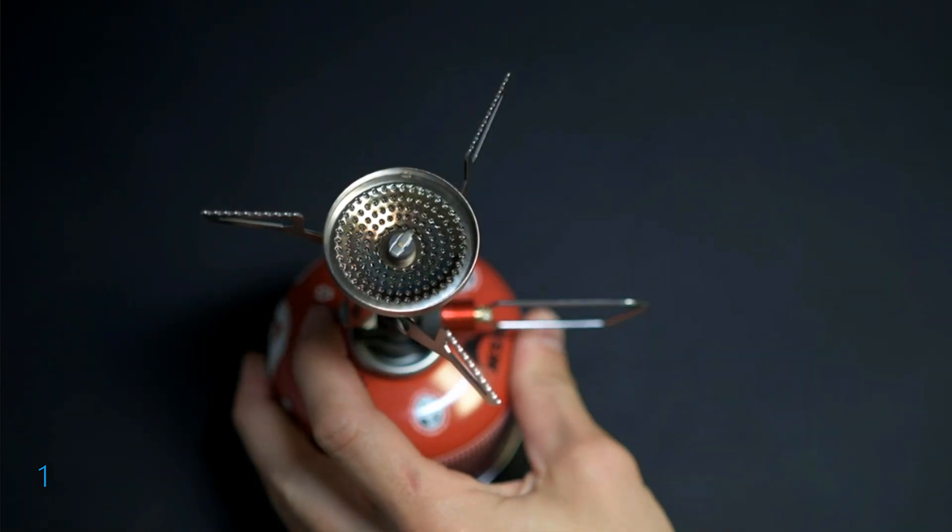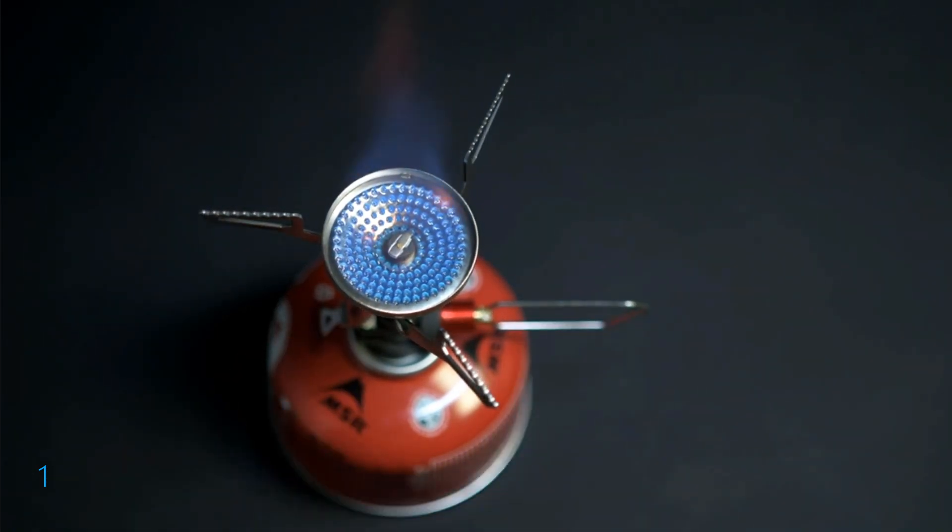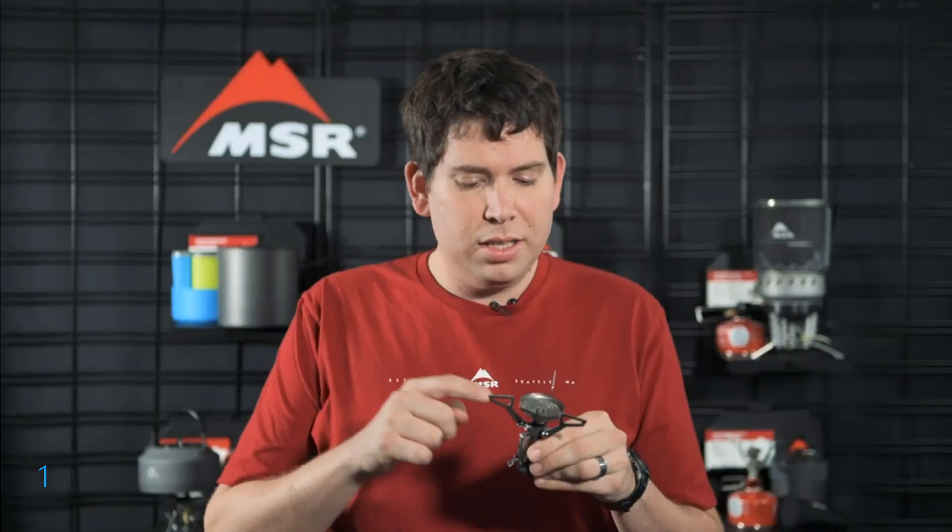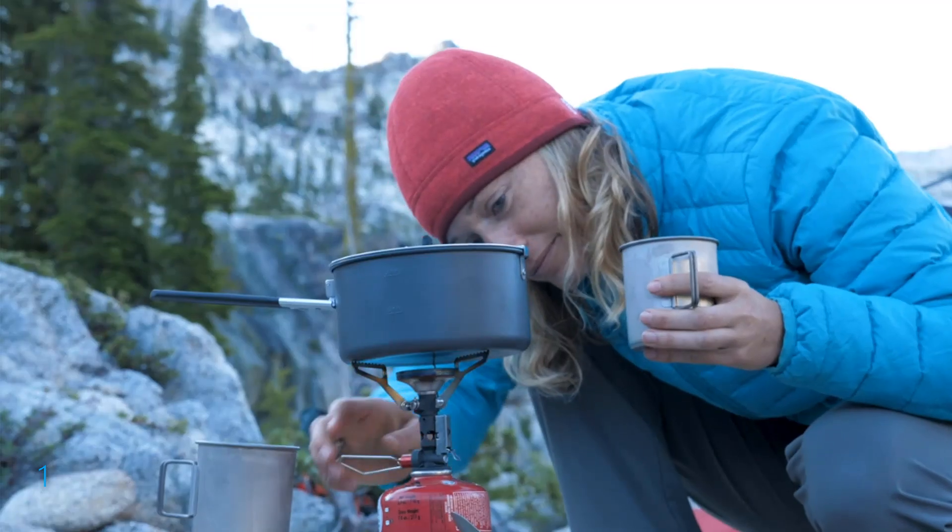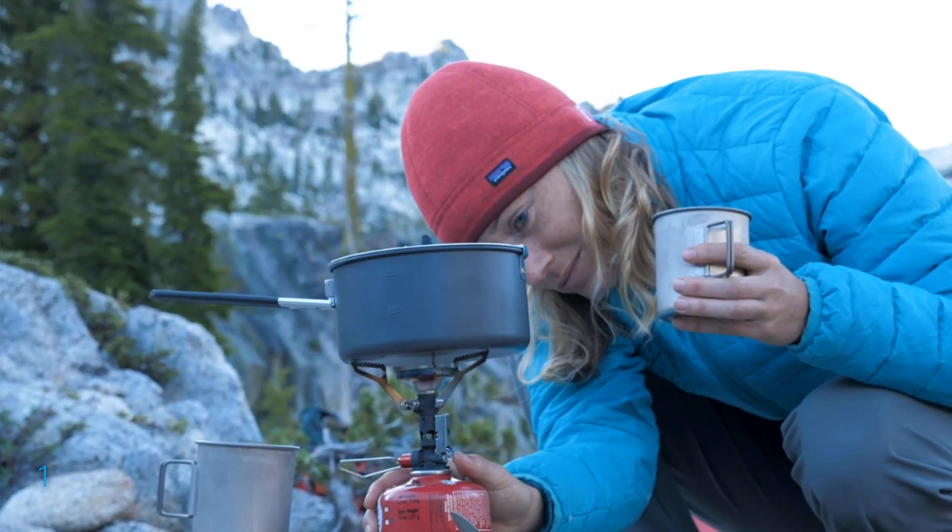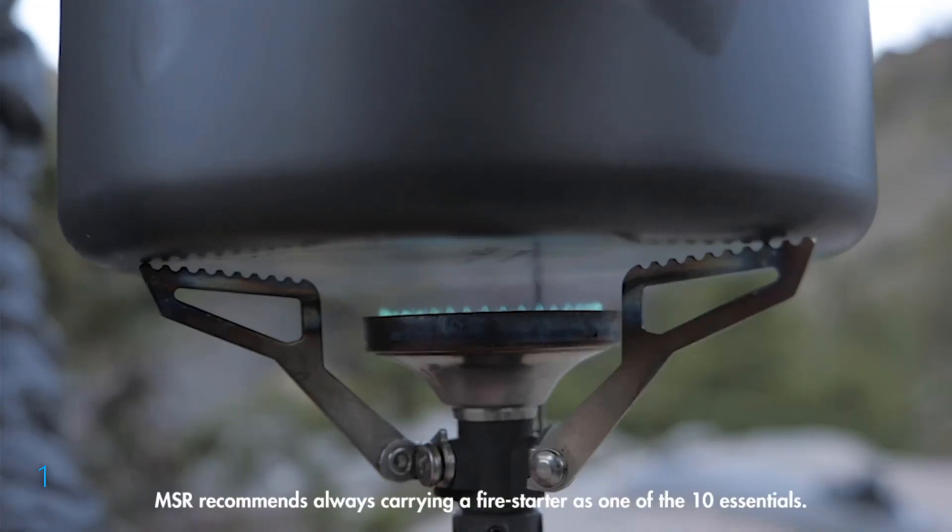The stove also comes equipped with Piezo push-start lighting for fast, easy ignition. This Piezo is the most durable one we've ever built. We internally routed the wire and set the electrode deep within the burner head for maximum protection. The Piezo was designed to match the Pocket Rocket's legendary durability and offer many seasons of use.